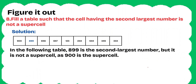Question 8: Fill the table such that the cell having the second largest number is not a supercell. We fill in the numbers in the table so that the second largest is placed next to the largest number. It is not a supercell because next to it we have assigned the largest number. So in the following table, 899 is the second largest but it is not a supercell as 900 is adjacent and is a supercell.